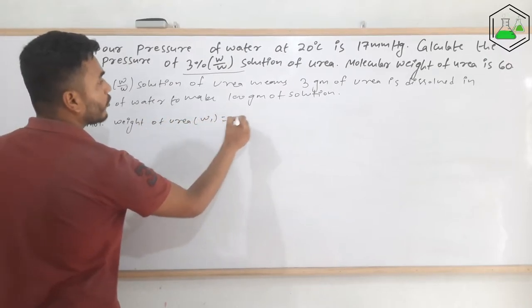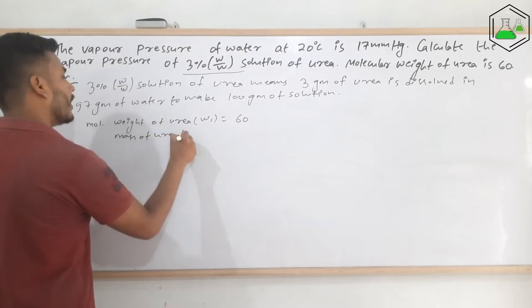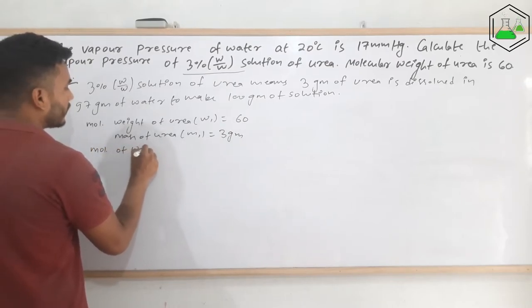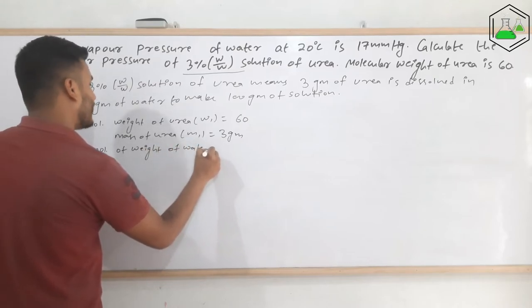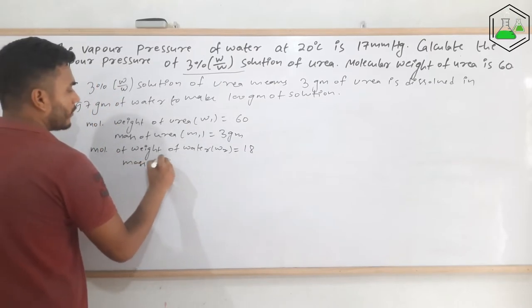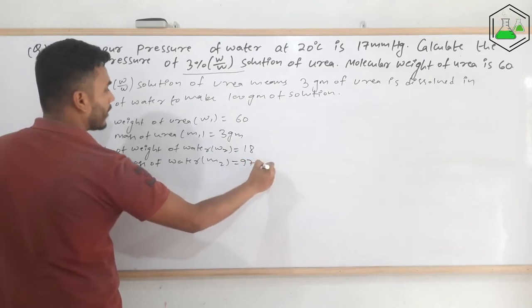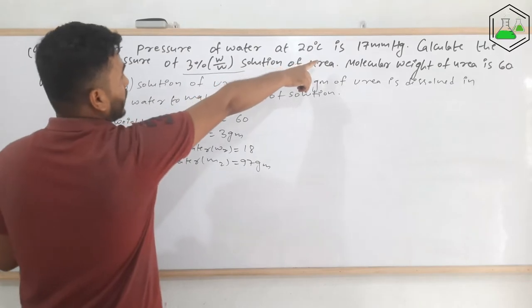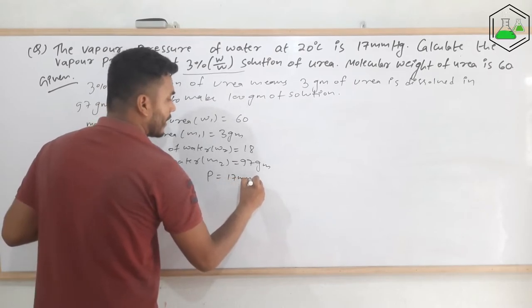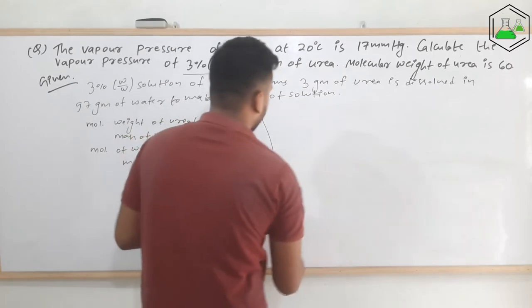So the molecular weight of urea — that is m1 — is given as 60. The mass of urea — that is w1 — is 3 grams. The molecular weight of water — that is m2 — is 18. The mass of water — that is w2 — is 97 grams. The vapor pressure of pure water is P = 17 mmHg. We need to calculate the value of Ps, the vapor pressure of the solution.